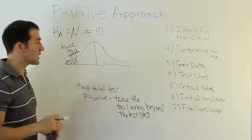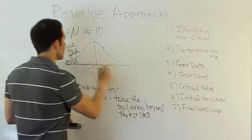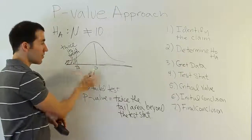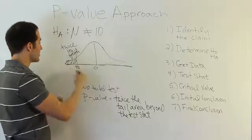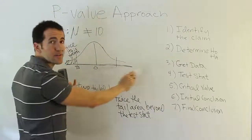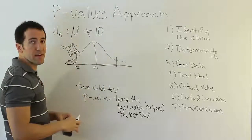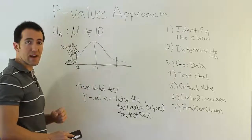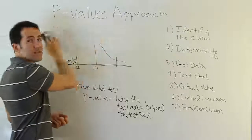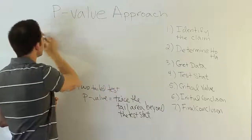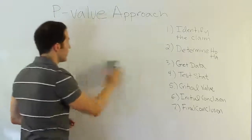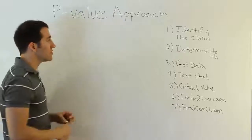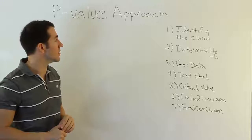The reason we double it: the p-value is the probability of a test stat this extreme, meaning this far from center or further. For a two-tail test, being this extreme is possible on both sides of the curve. Those are the three rules. Finding those areas is straightforward — something done earlier in the course. Now let's see how p-values fit into the original seven steps of hypothesis testing: identify the claim, determine H₀ and HA, get the data, and calculate the test statistic — nothing changes through step four.